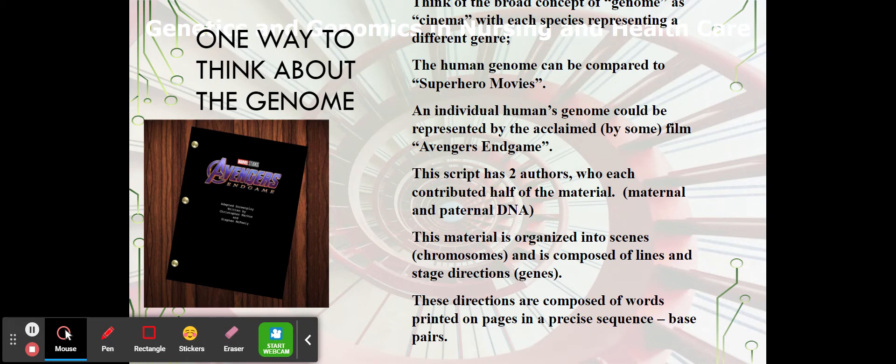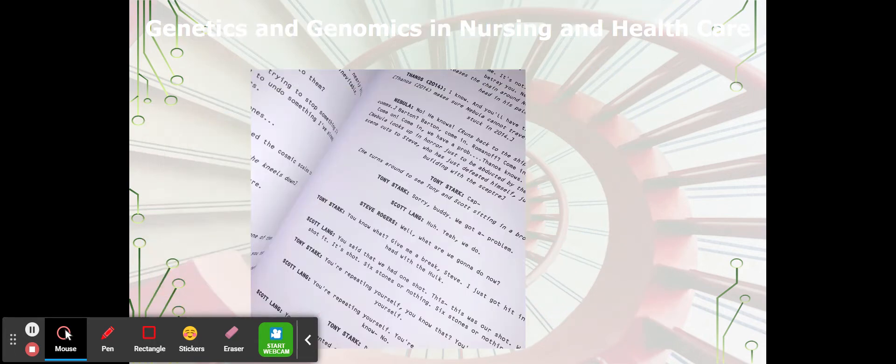And the chromosomes package the DNA so that it's a little more organized. These directions are composed of words and printed on pages, on paper, in a precise sequence. And that's like your base pairs, your base ingredients. Okay. So there's your script. And you can see it has lines for the actors. It has directions. It might have fight choreography. It might have directions for the lighting guy. But it kind of contains all of the directions for producing that film.